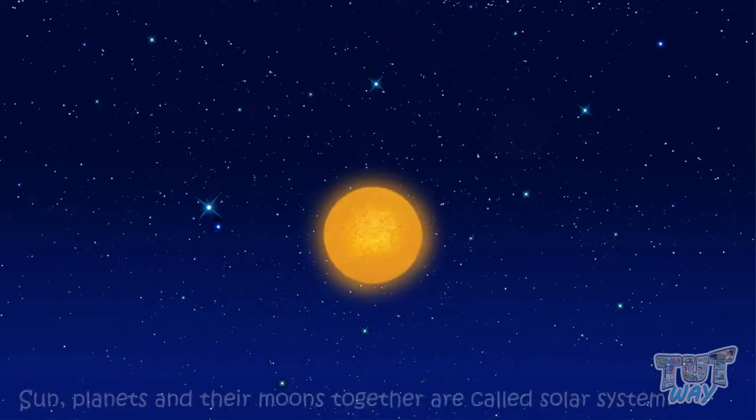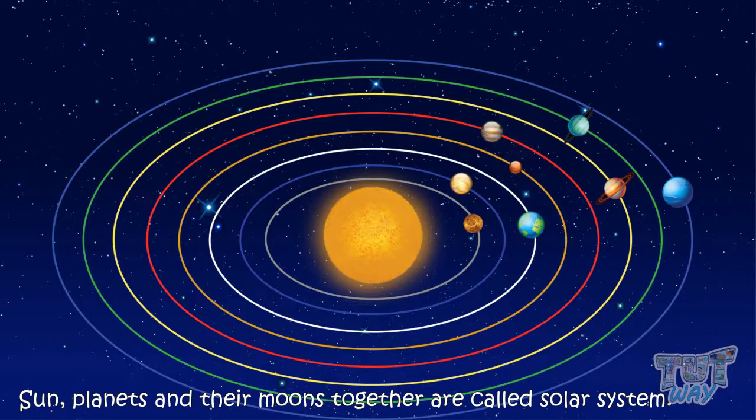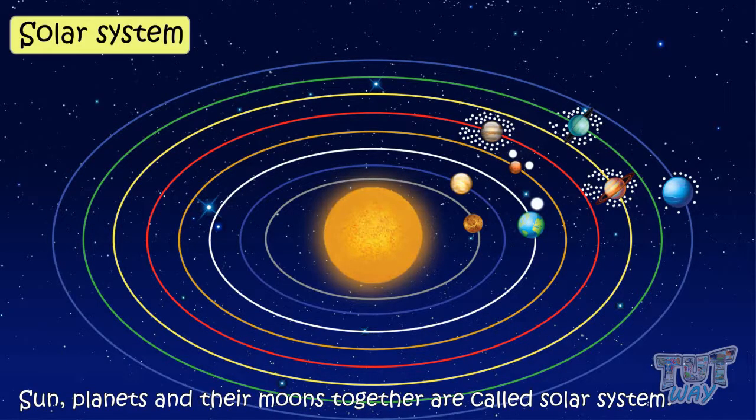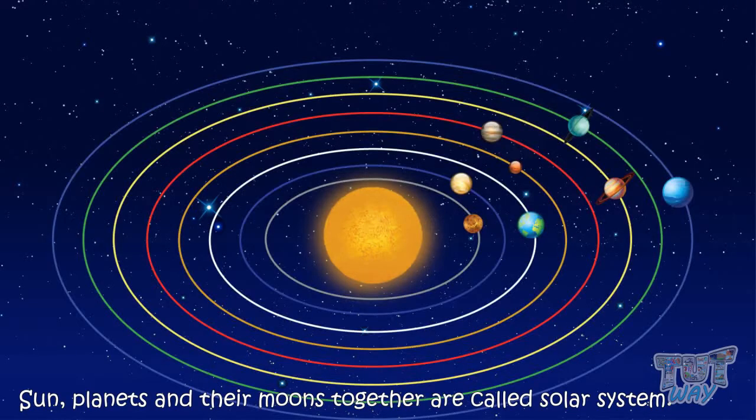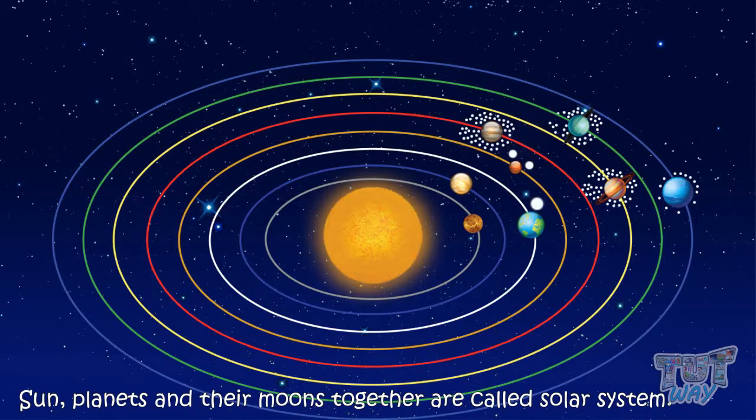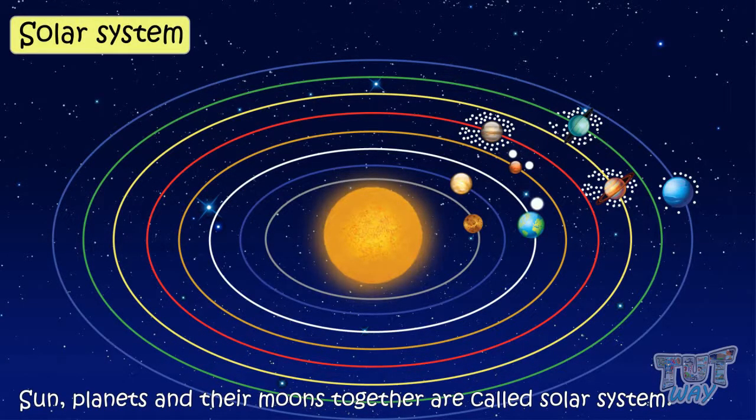Sun, planets, and their moons together are called solar system. Let's learn it again. Sun, planets, and their moons together are called solar system.